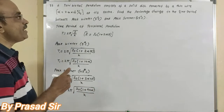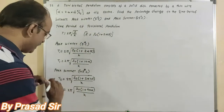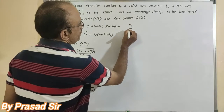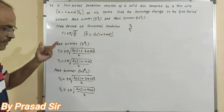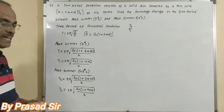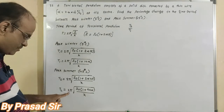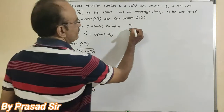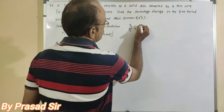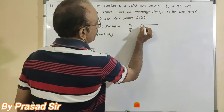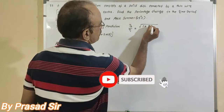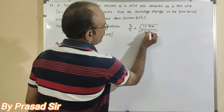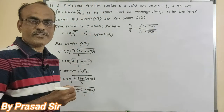Since we need the percentage change, we take the ratio T2 by T1. In T2 divided by T1, k gets cancelled, 2 pi gets cancelled, and I naught also gets cancelled. The remaining expression is square root of 1 plus 90 alpha divided by square root of 1 plus 10 alpha.